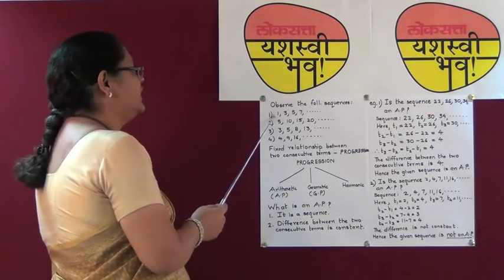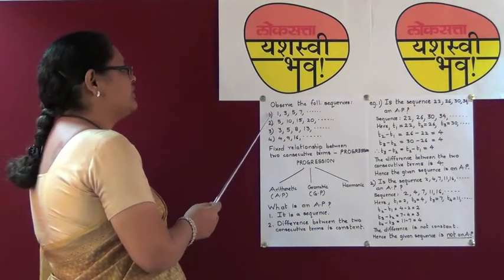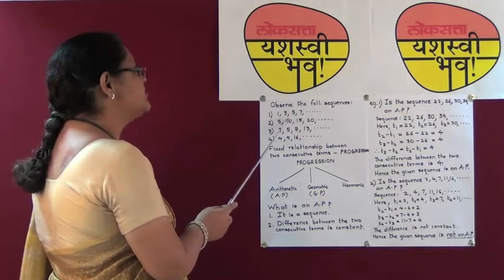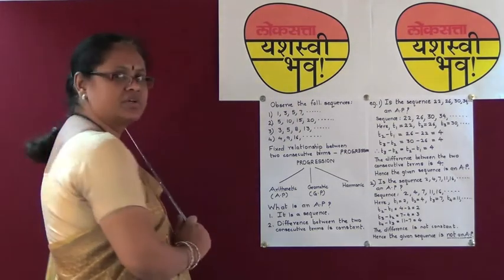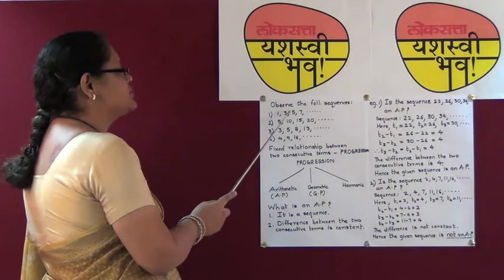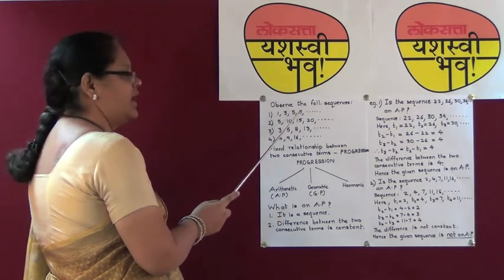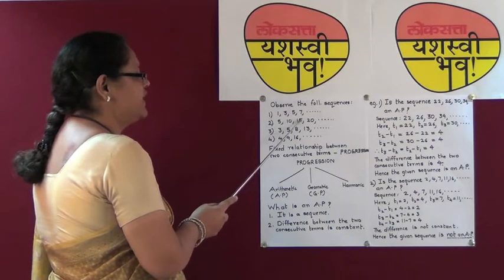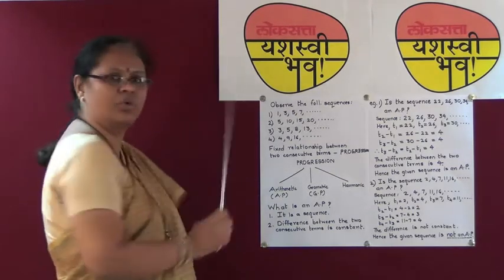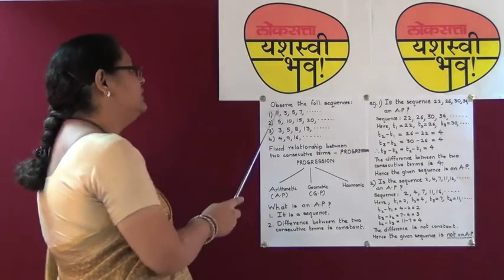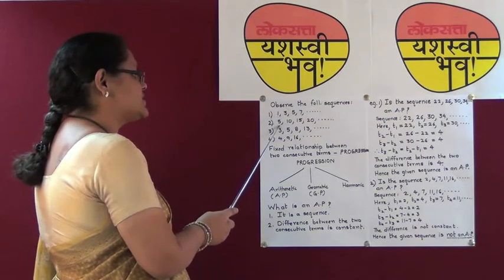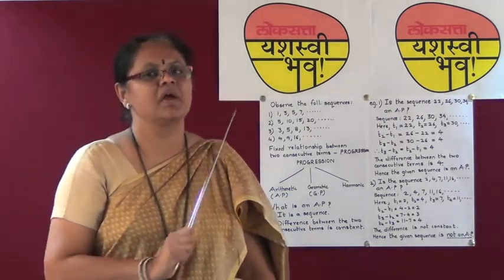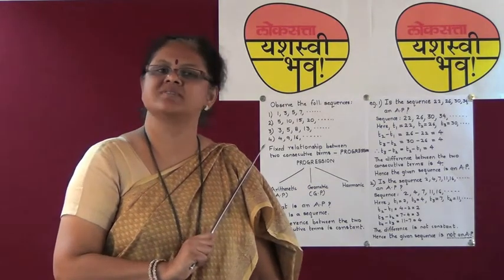If you carefully observe the first two sequences, you find there is a fixed relationship between two consecutive terms — plus 2, plus 2, plus 2 in the first, and plus 5, plus 5, plus 5 in the second. These sequences where there is a fixed relationship between two consecutive terms, we call a progression.